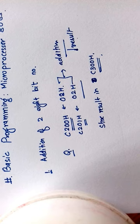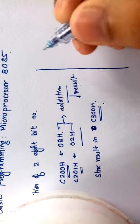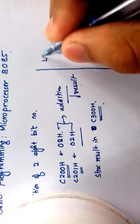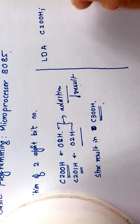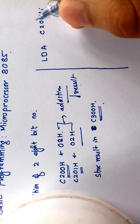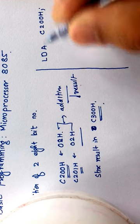First, what we do is we load the accumulator with the content of C200H. What this instruction set does is load the accumulator with the content of C200H.